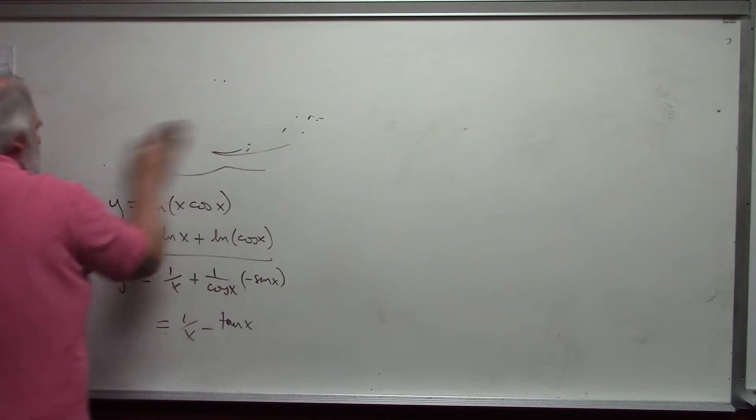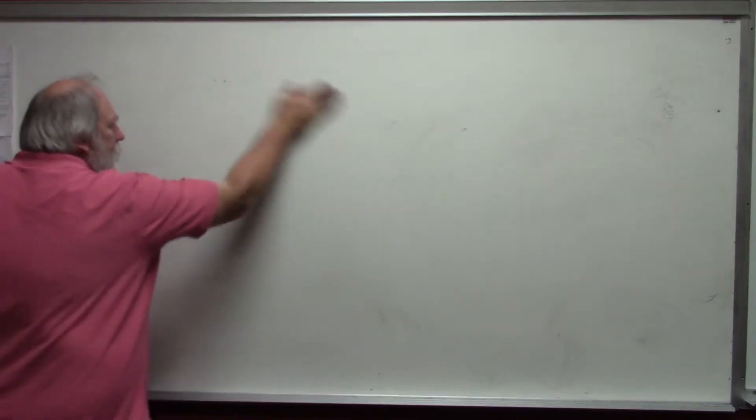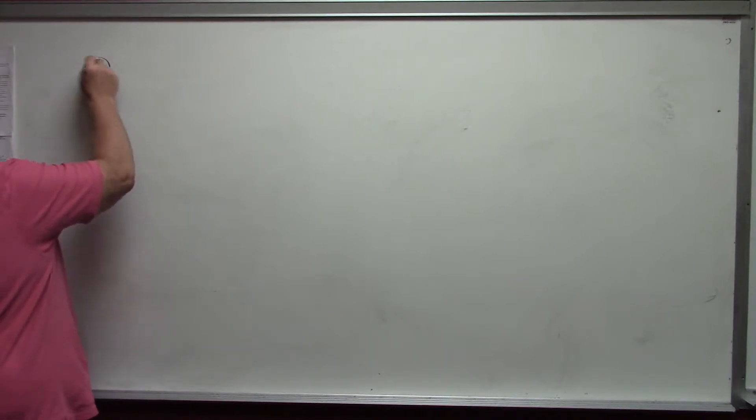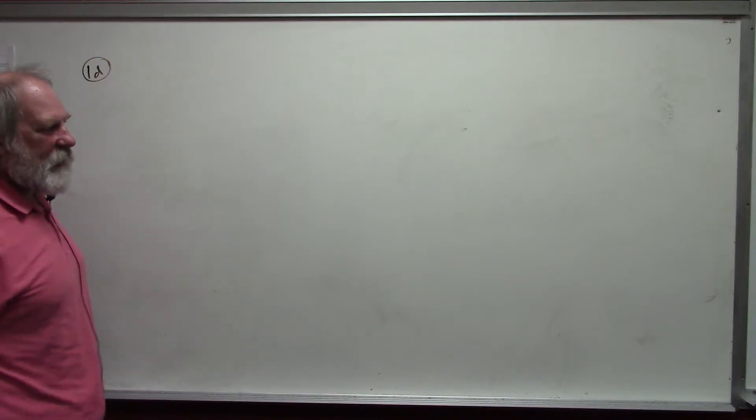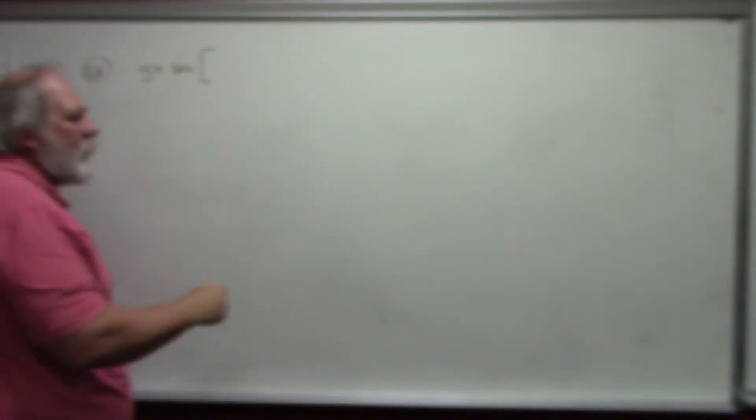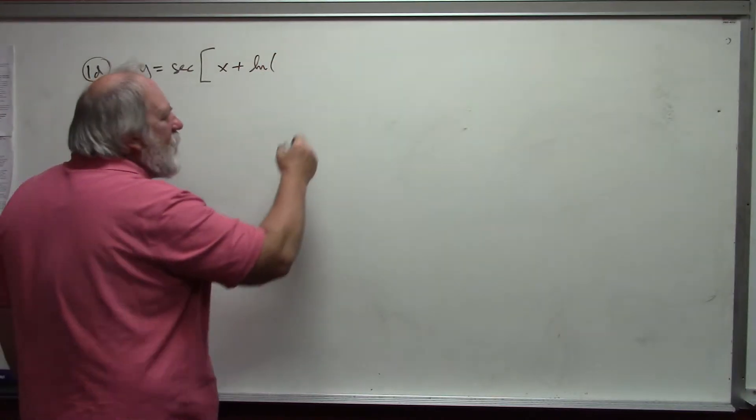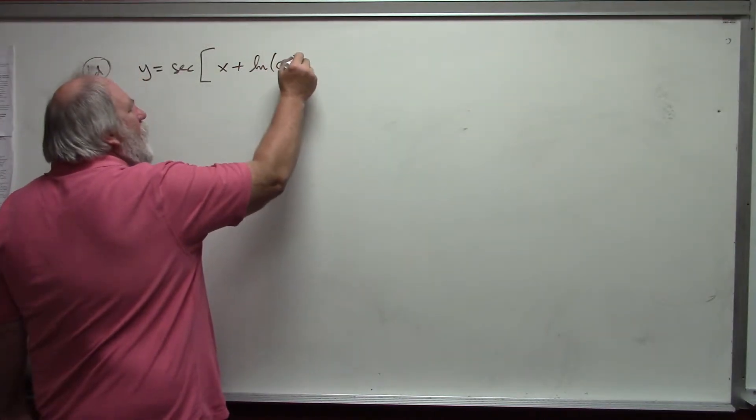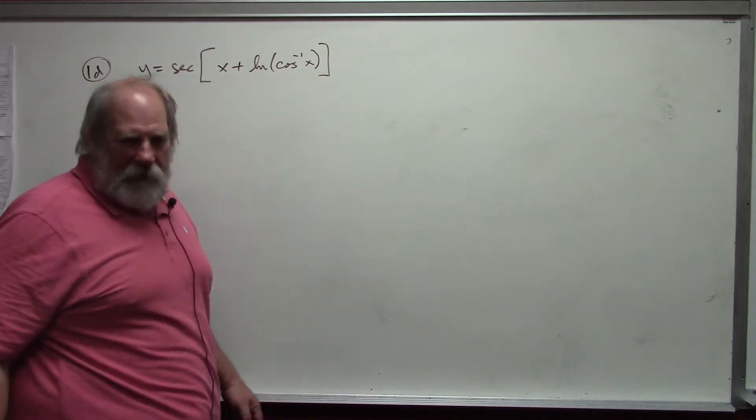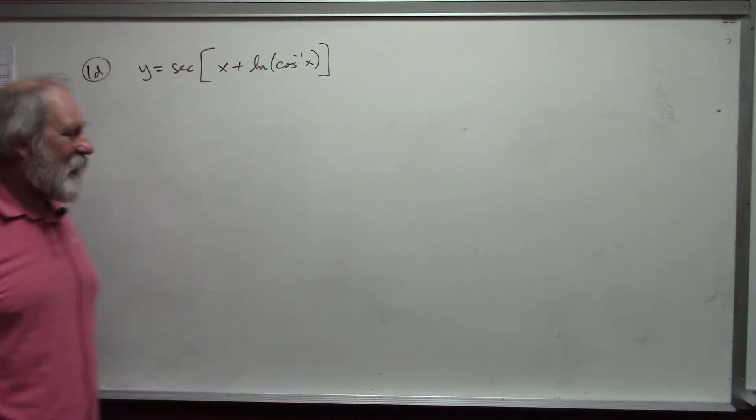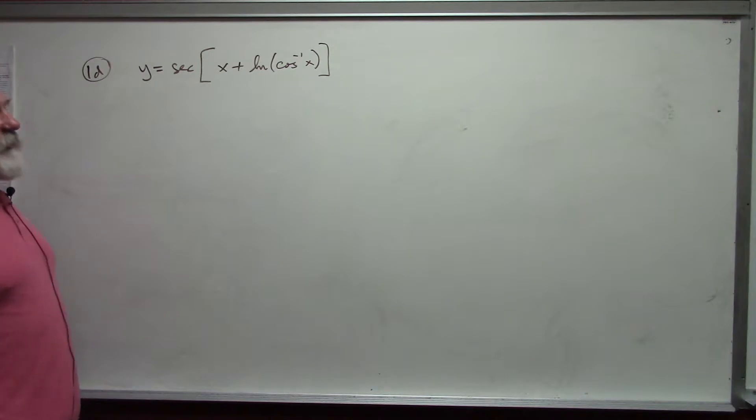Suppose I have, this is problem 1d in the worked out solutions, y equals the secant of x plus the natural log of arc cosine of x. I like to bring in these previous functions that you've seen to try and remind you of derivatives and rules that we've had. This is again a composition.